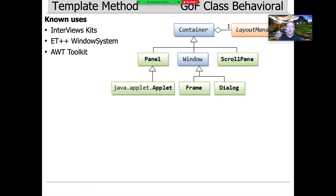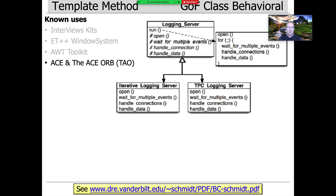There are lots and lots of known uses. The Gang of Four book lists a whole bunch from the early days of frameworks and object-oriented design, circa early to mid-80s. Java has a bunch of examples — the AWT toolkit uses template method all over the place. The C++ middleware I've built over the last three decades — called ACE and the ACE ORB or TAO — uses template method very heavily. You can take a look at the linked article for more information about how to use template method in the context of ACE.